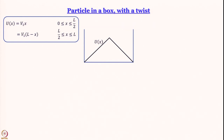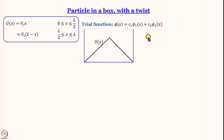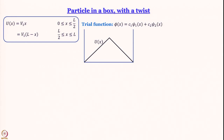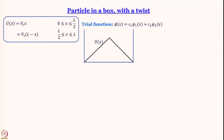For this system, we use the trial function φ(x) = c₁ψ₁(x) + c₂ψ₂(x). We want to use orthonormal functions, and it makes sense to use the orthonormal eigenfunctions of the Hamiltonian of the system for which we can solve the Schrödinger equation exactly — namely the standard particle in a box with V = 0 inside.